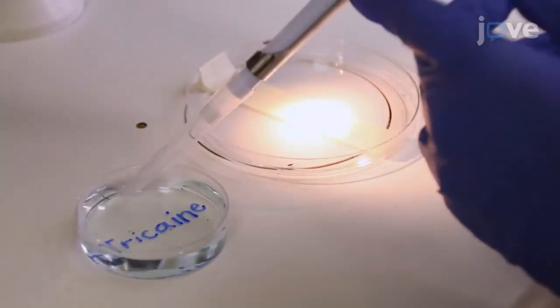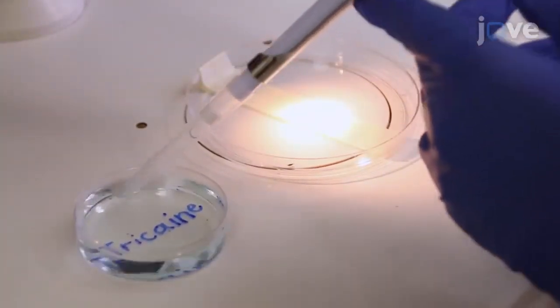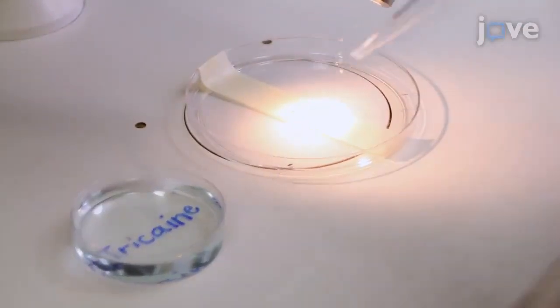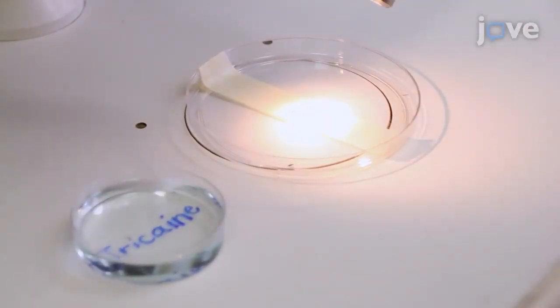Using the modified P1000 micropipette, pick up an anesthetized zebrafish larvae and place it onto the positioned autoclave tape on the petri dish lid.